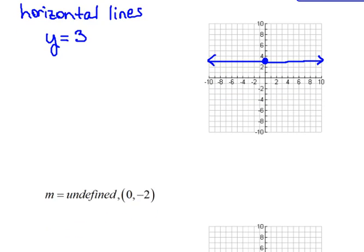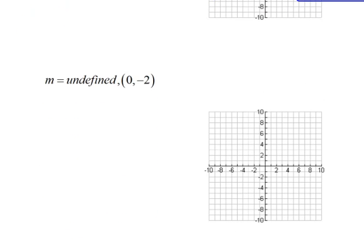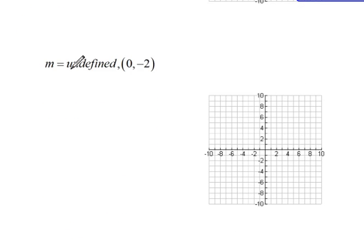Now the converse to that would be something that looked like this. Here we have an undefined slope and the point (0,-2). Well, if our slope is undefined, that again should send off warning bells, because there's only one kind of line that has an undefined slope, and that would be a vertical line.